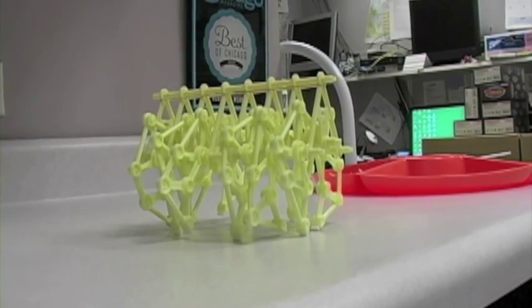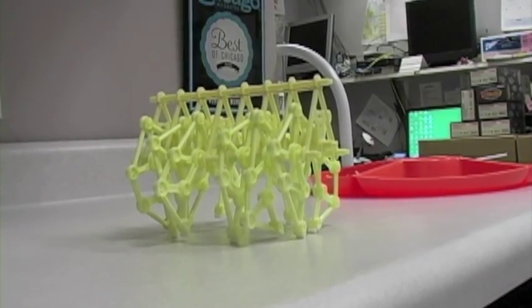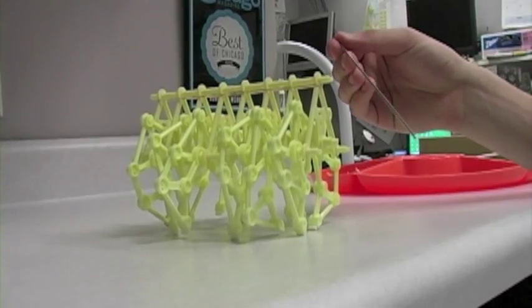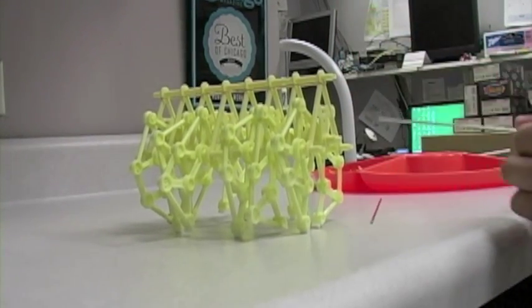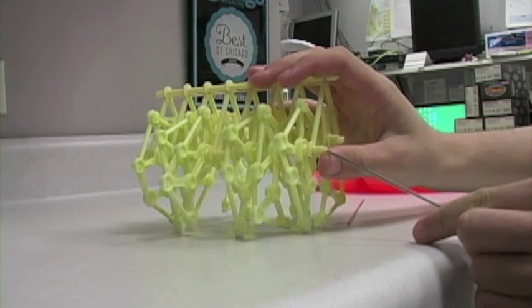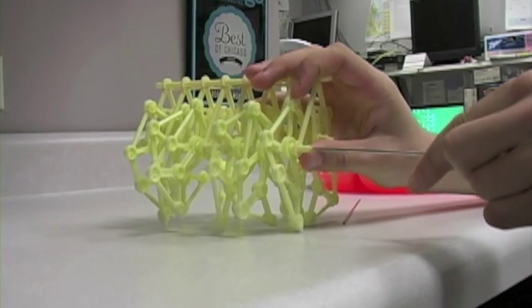For step two of section three, you're going to insert the long shafts into the body of the robot so that they're sticking out on both ends.